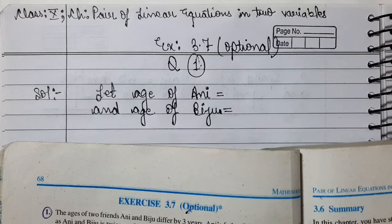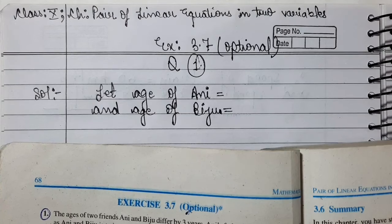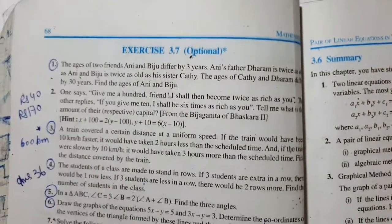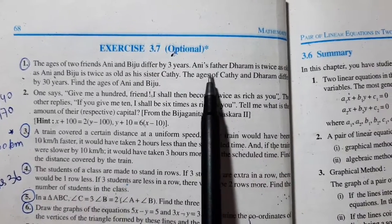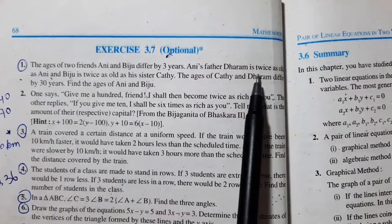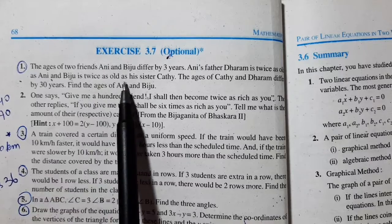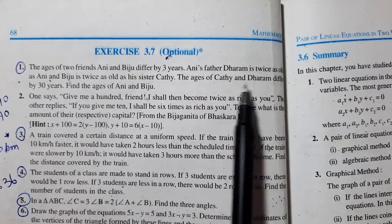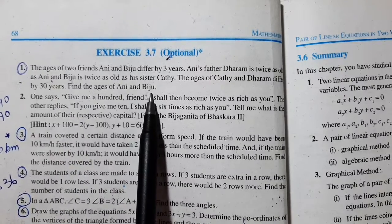Hello everyone, welcome to my YouTube channel Raminder Maths Hub. I am Raminder. Today I am doing exercise number 3.7, Question number 1. The ages of two friends Annie and Biju differ by 3 years. Annie's father Dharam is twice as old as Annie and Biju is twice as old as his sister Kathy. The ages of Kathy and Dharam differ by 30 years. Find the ages of Annie and Biju.